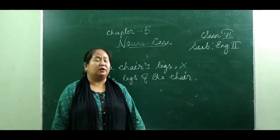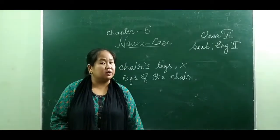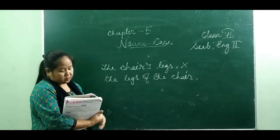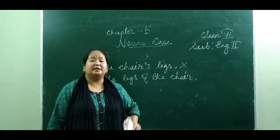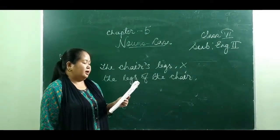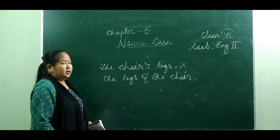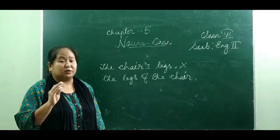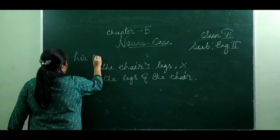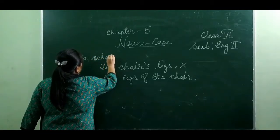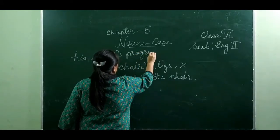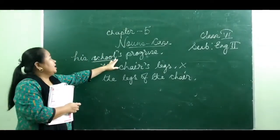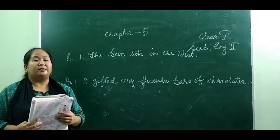Also, apostrophe and S is used only with living beings. We do not use apostrophe and S with non-living things. For example, we don't say 'the chair's legs' — that is wrong. We say 'the legs of the chair.' However, we do use apostrophe with nouns denoting space, time, and weight — for example, 'a month's time,' 'a meter's length,' 'a day's stay.' And when non-living things are personified, then we use apostrophe and S — for example, 'his school's progress.' The school is non-living but it is personified, so we use apostrophe and S.